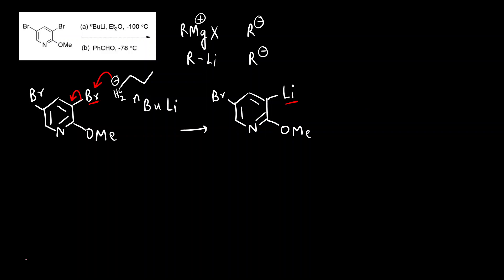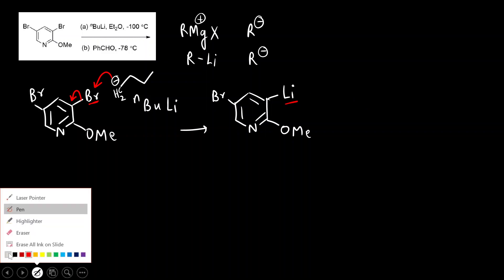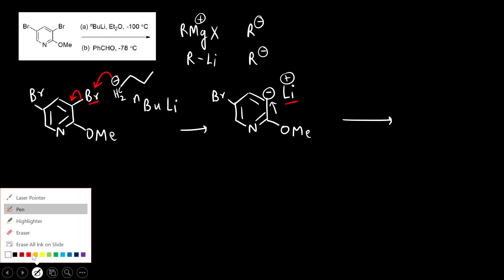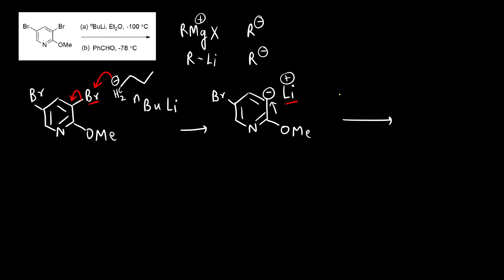Now what is the next reaction? This is negative, this is positive, so this negative charge can act as a nucleophile and it can attack an electron deficient carbon. In the second step we react with benzaldehyde. This will attack the carbonyl carbon - this is electron deficient delta plus, this is electron rich delta minus because oxygen is electronegative, and this will open up like this.